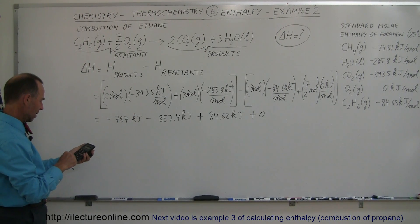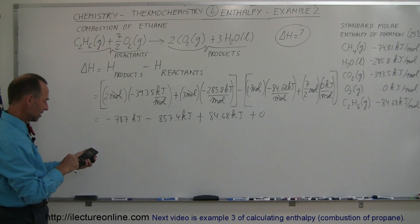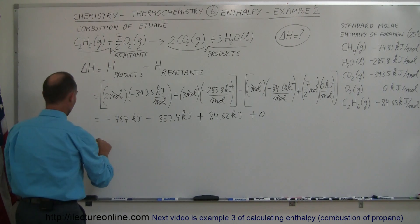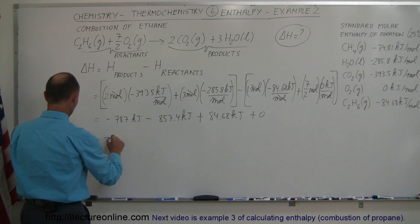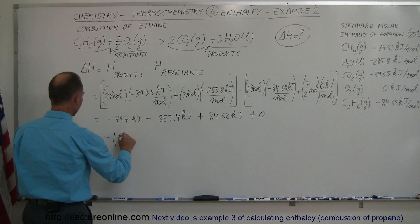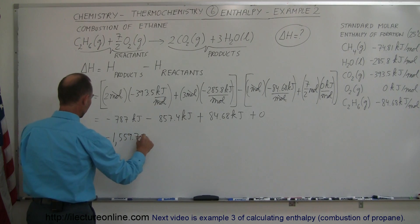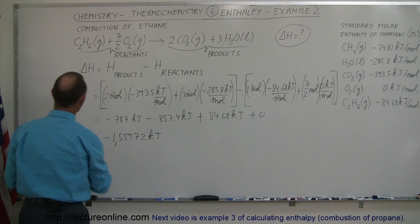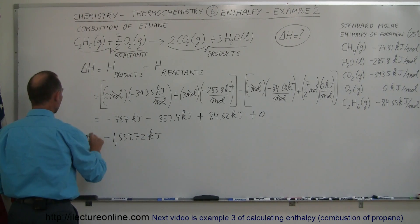So we have minus 787 plus 84.68, that means minus 1,559.72 kJ. That is the enthalpy change in this reaction.